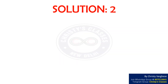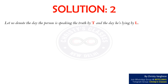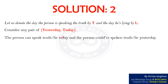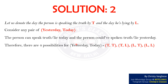Now let us look into the second solution. Let us denote the day the person is speaking the truth by T and the day he is lying by L. Consider any pair of (yesterday, today). The person can speak truth or lie today, and the person could have spoken truth or lie yesterday. Therefore, there are 4 possibilities for the pair (yesterday, today): T,T — T,L — L,T — and L,L.